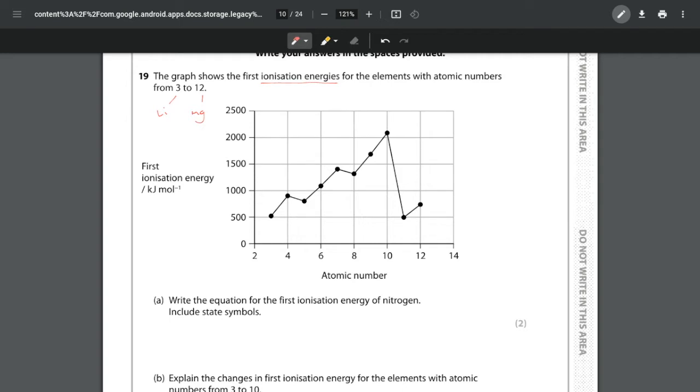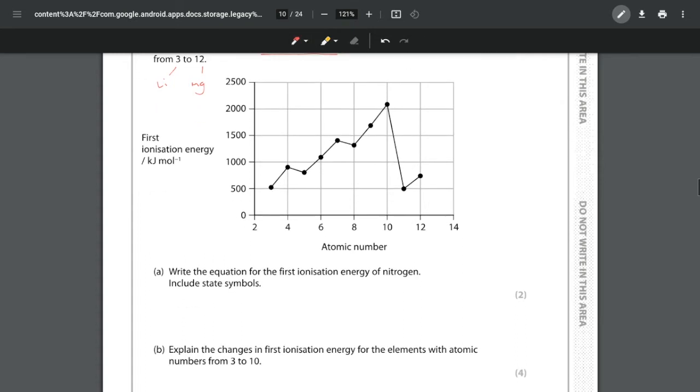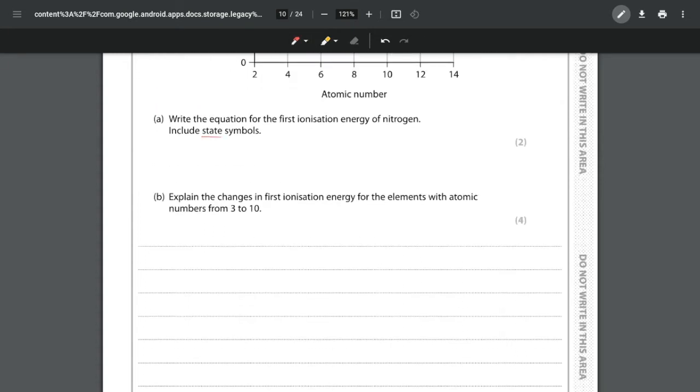Part A we want to look at the equation for the first ionization energy of nitrogen and we have to make sure to include state symbols. This is where most people lose their marks. So we're going to write nitrogen as a gas, and ionization energy is the removal of an electron. So we form nitrogen ion as a gas plus an electron. That is how we get our two marks. One mark for the formulas, one mark for your state symbols.